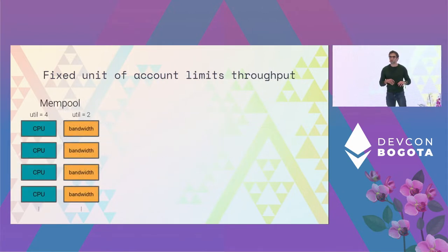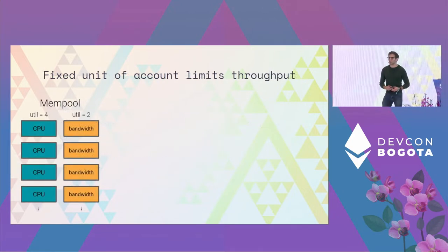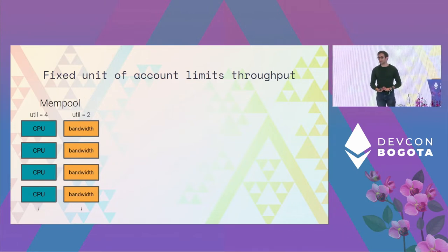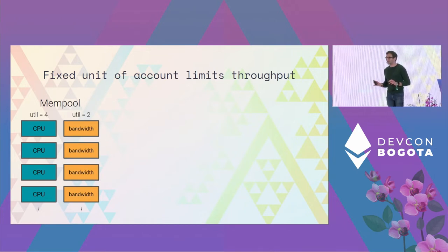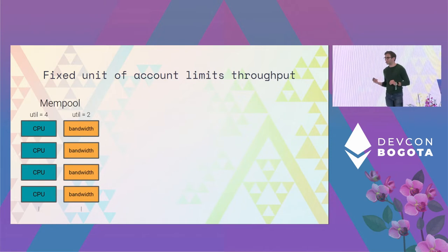What we're going to concentrate on today is throughput — why having a single-dimensional market is actually bad from a network designer's perspective. This is a very stylized example that is not at all close to practice, but I hope it illustrates the idea.